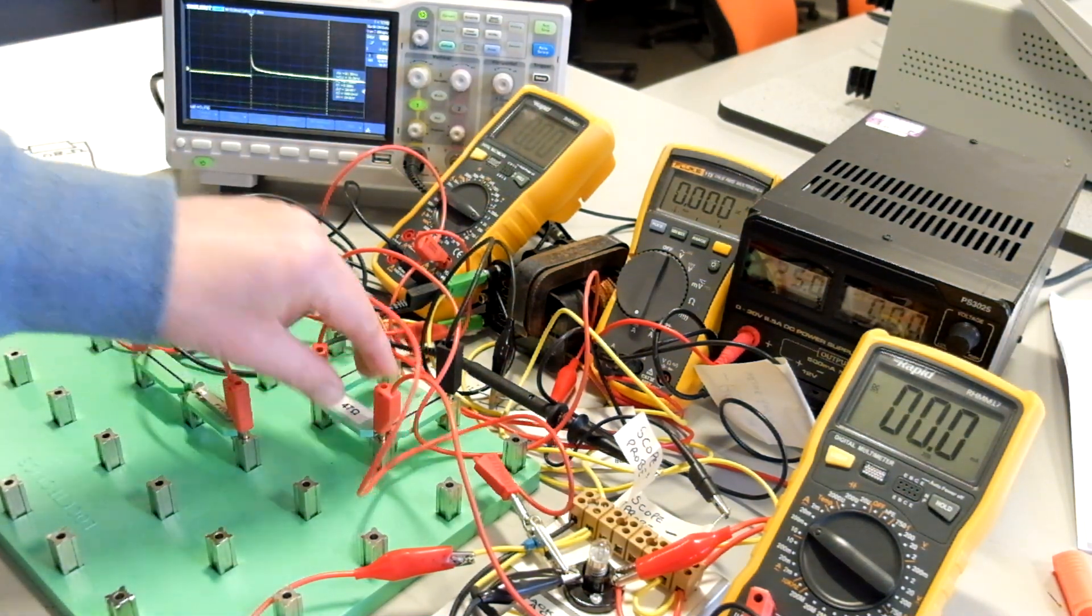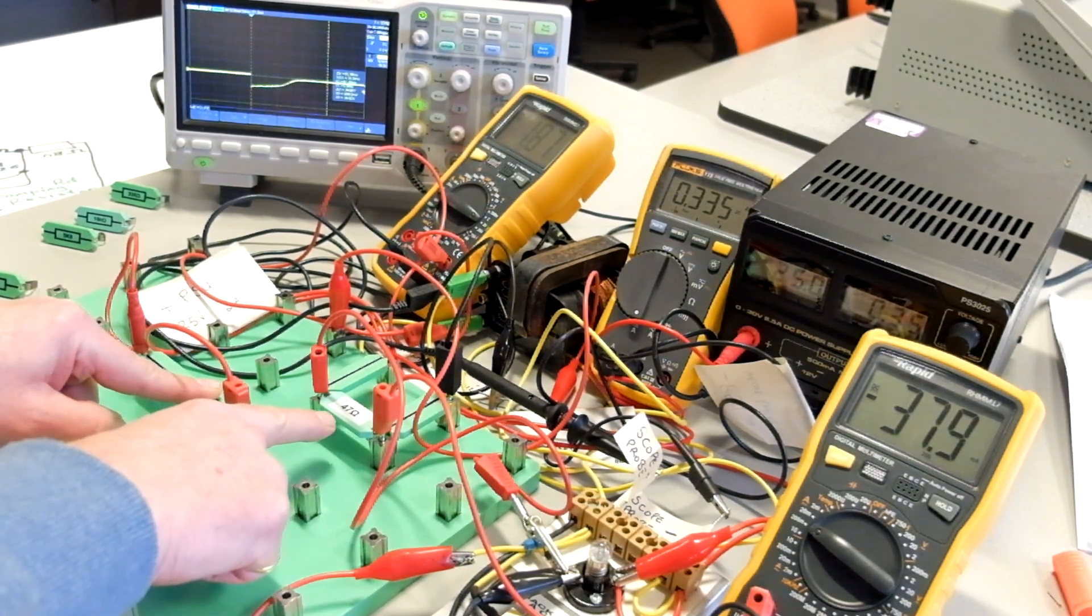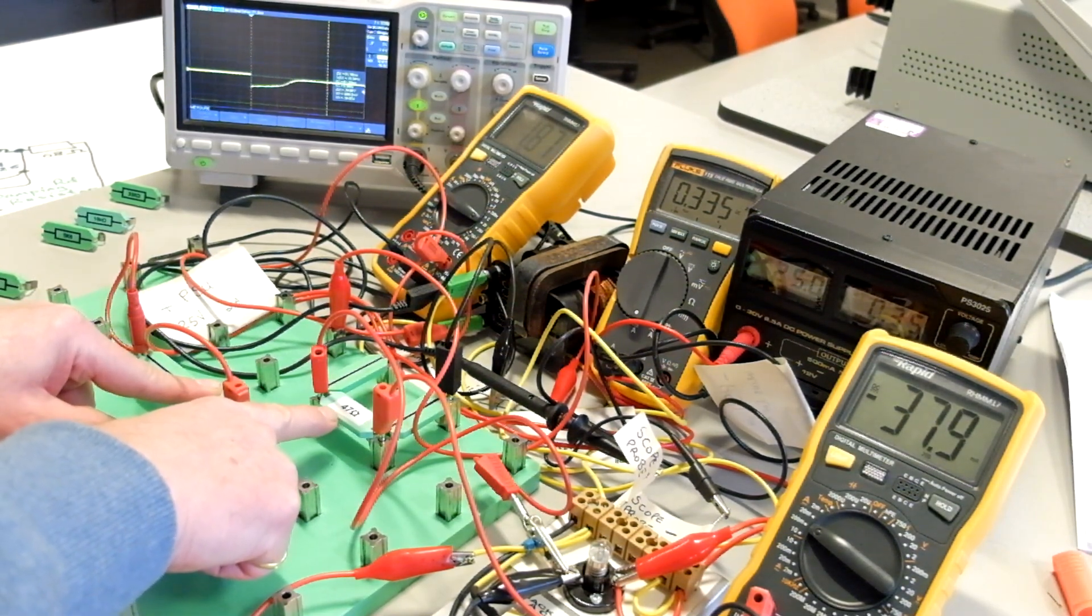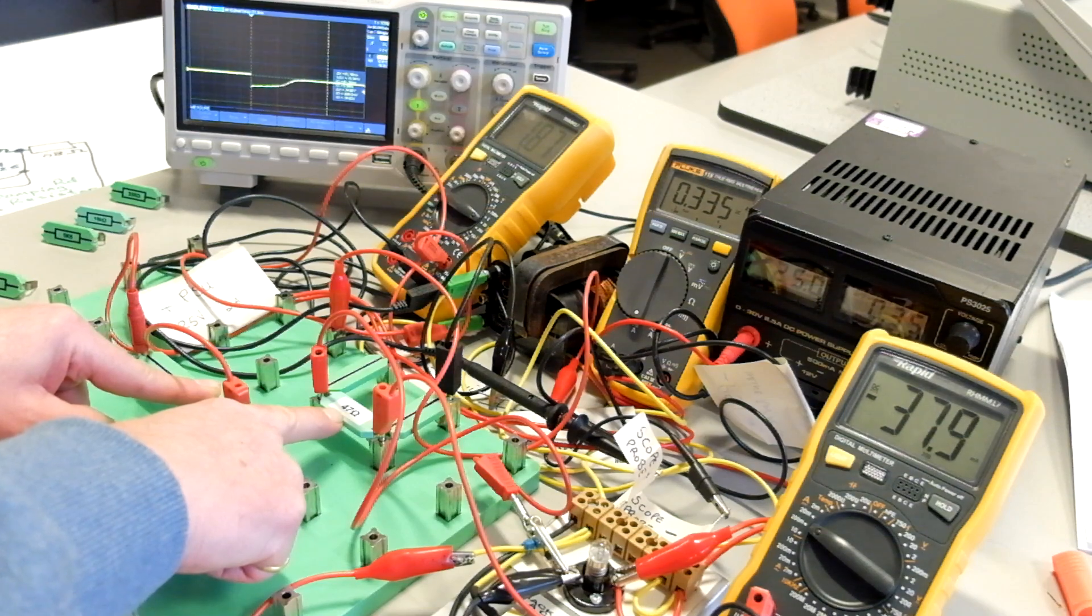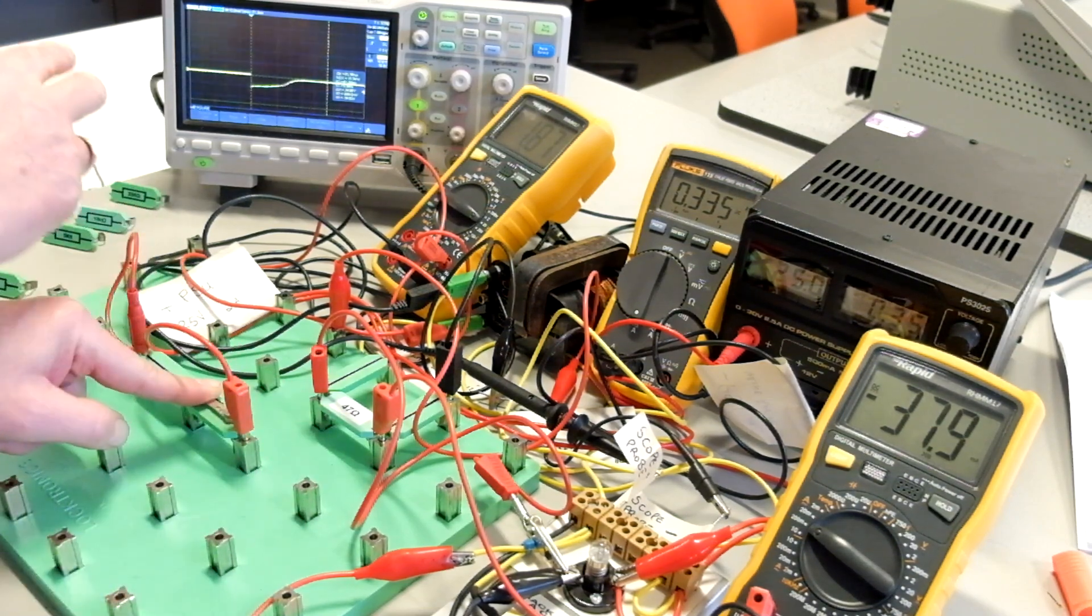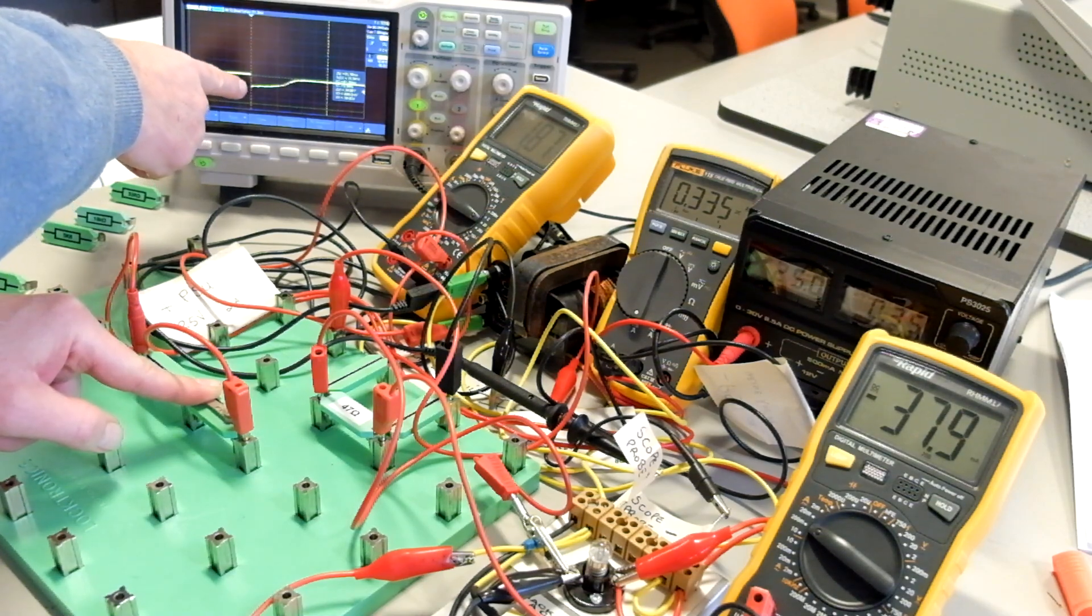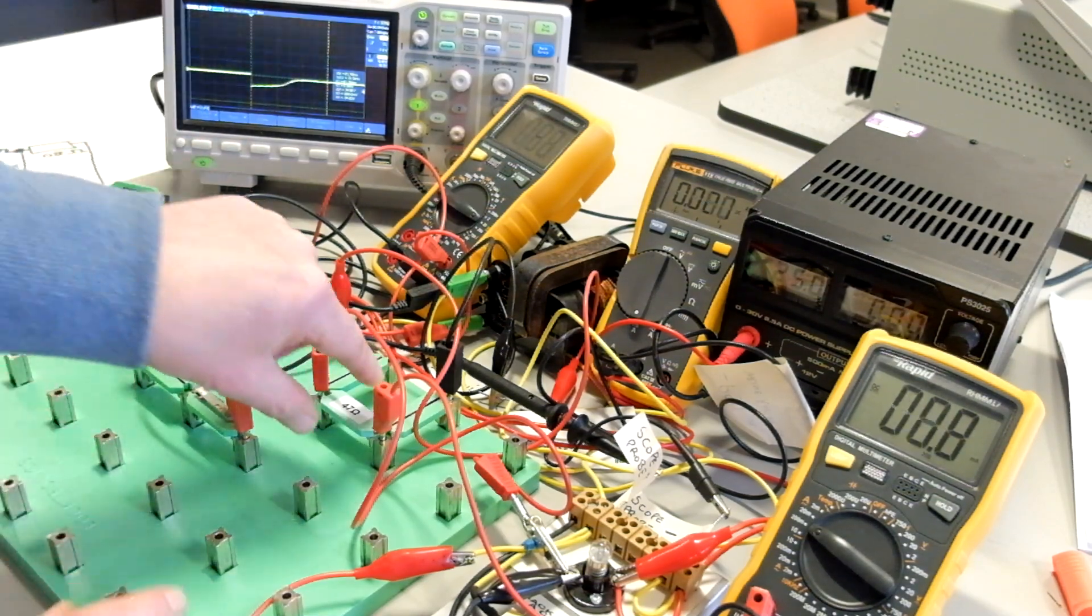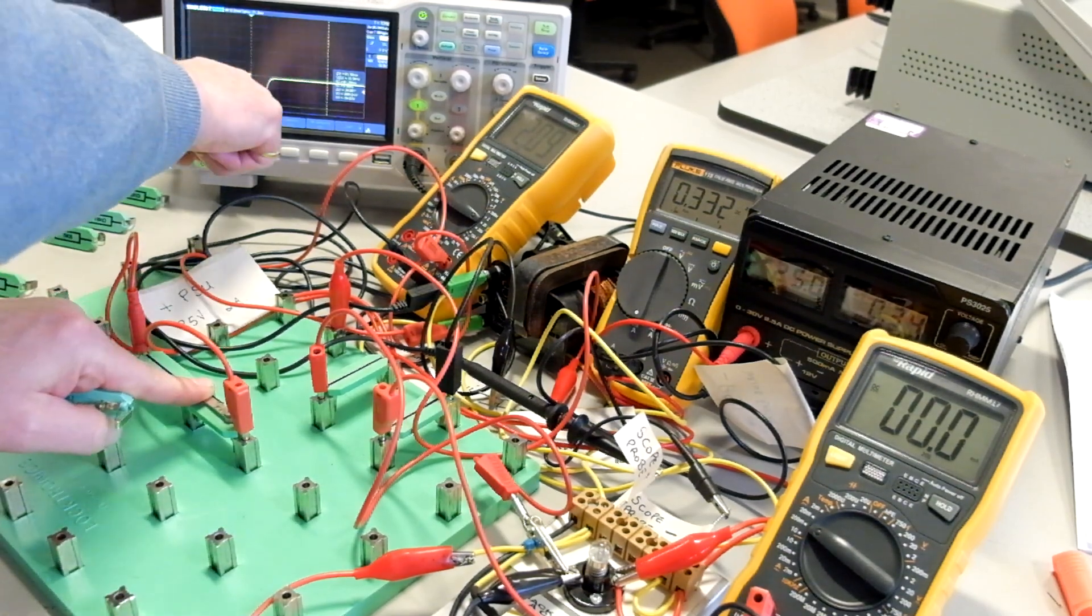So if we have 47 ohms in there, what we effectively do is get a voltage divider between the 47 ohms and the 68 ohms, and it reduces the voltage down to approximately half. We don't get the full 25 volts. It's about 10 volts there. No damping resistor, we're going to get the full 25 volts here.